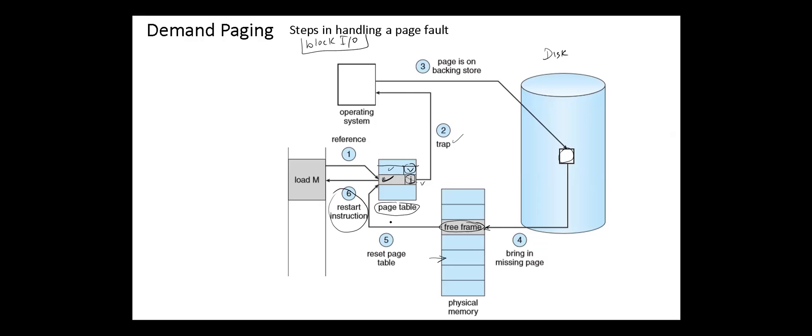We can start executing a process with no pages in memory. When the operating system sets the instruction pointer to the first instruction of the process, which is on a non-memory resident page, the process immediately faults for the page. After this page is brought into memory, the process continues to execute. It faults as necessary until every page that it needs is in memory, and we name this scenario as pure demand paging: never bring a page into memory until it is required. This is the extreme case, but in practice, part of the process pages are initially loaded into the physical memory, so page faulting will not occur at the initial phases.